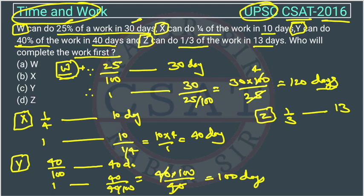This will be 4 times. So here, Z is completing 1 by 3 of the work in 13 days. So 1 work he will complete in 13 upon 1 by 3. It will be 3 into 13, which equals 39.